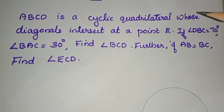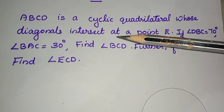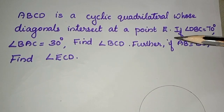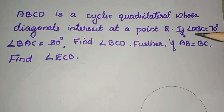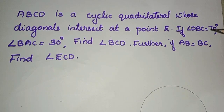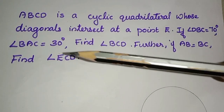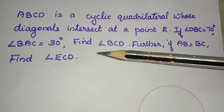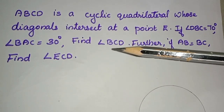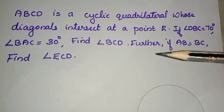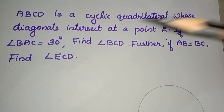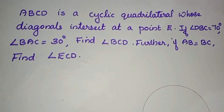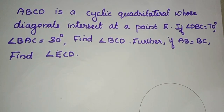ABCD is a cyclic quadrilateral whose diagonals intersect at a point E. If angle DBC is equal to 70 degrees, angle BAC is equal to 30 degrees, find angle BCD. Further, if AB is equal to BC, find angle ACD.